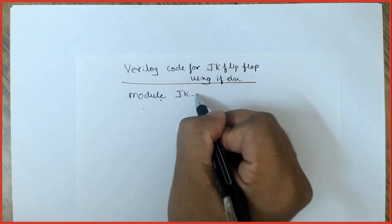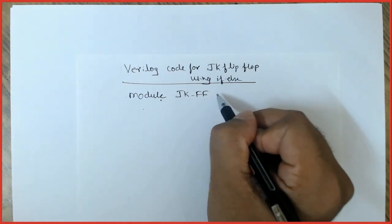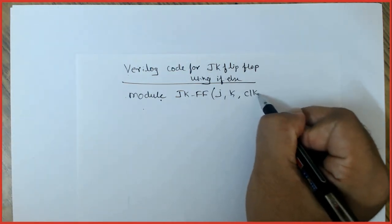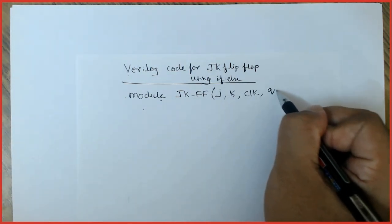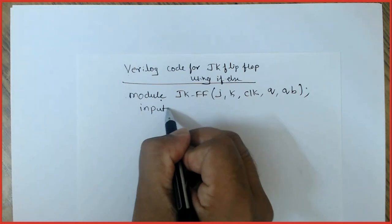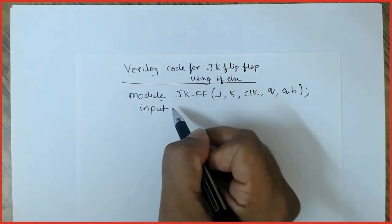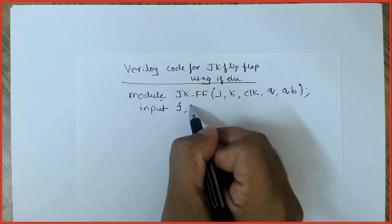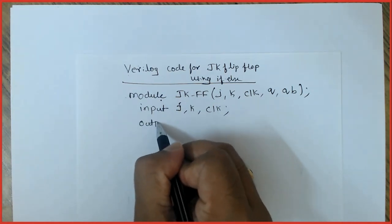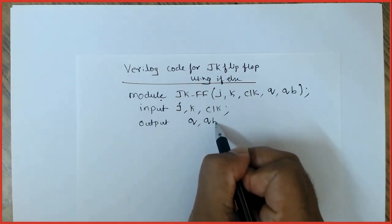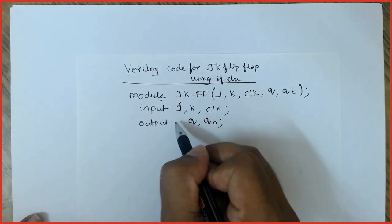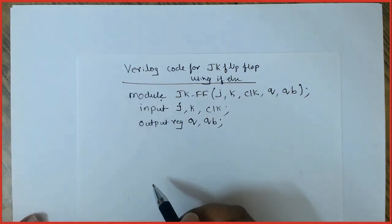Module JK flip-flop — you can give any name. The inputs are J, K, and clock, and the outputs are Q and QB. Inputs are single-bit: J, K, and clock. Outputs are Q and Q-bar (QB). Since I'll be using Q and QB inside the always block, I should declare them as registers.